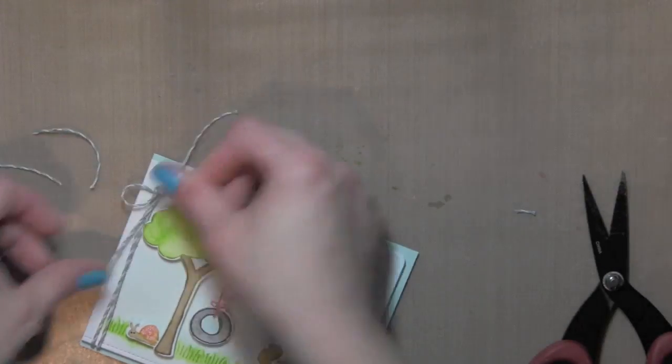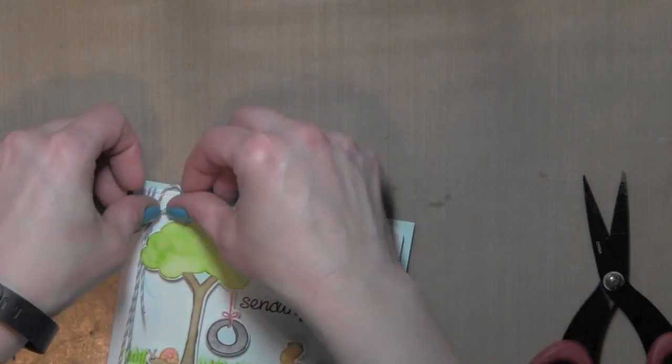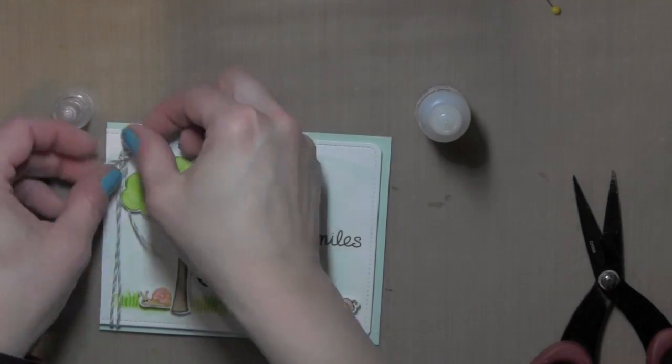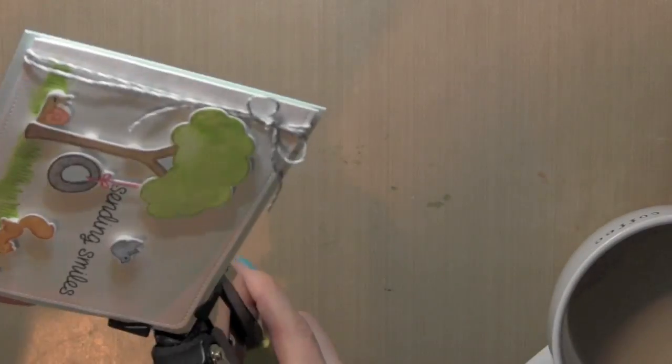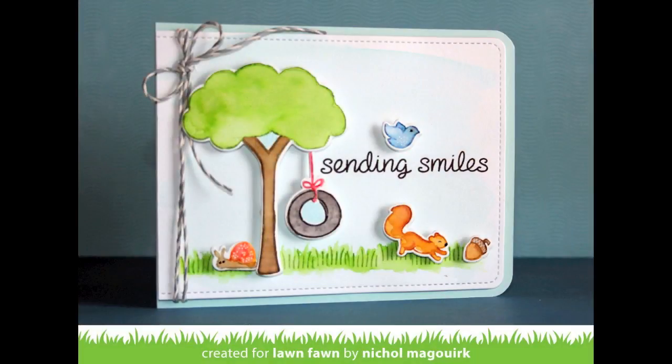Trim off those ends. And then I did take a little glossy accents underneath the knot to hold that knot in place so that it didn't shift or move anywhere. Just put something heavy on it until it dries. Rounded the corners to match my stitched panel and my card is finished.